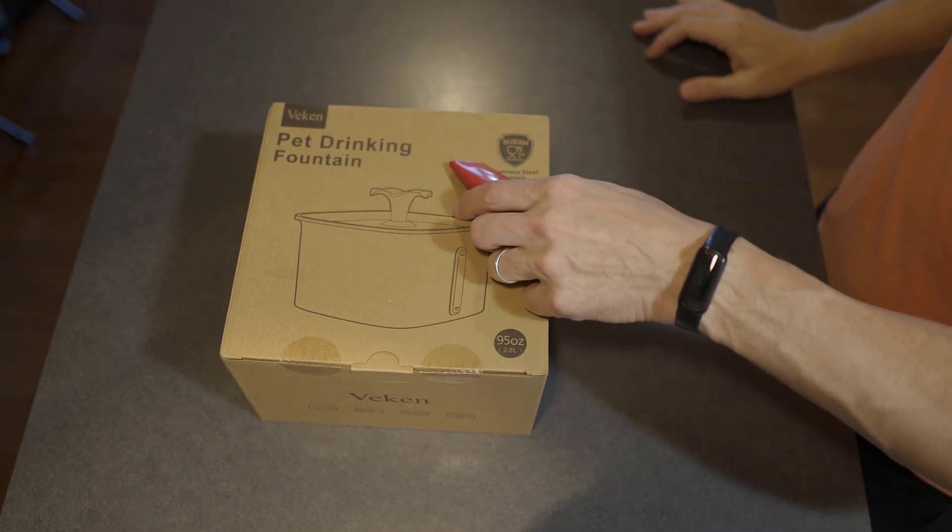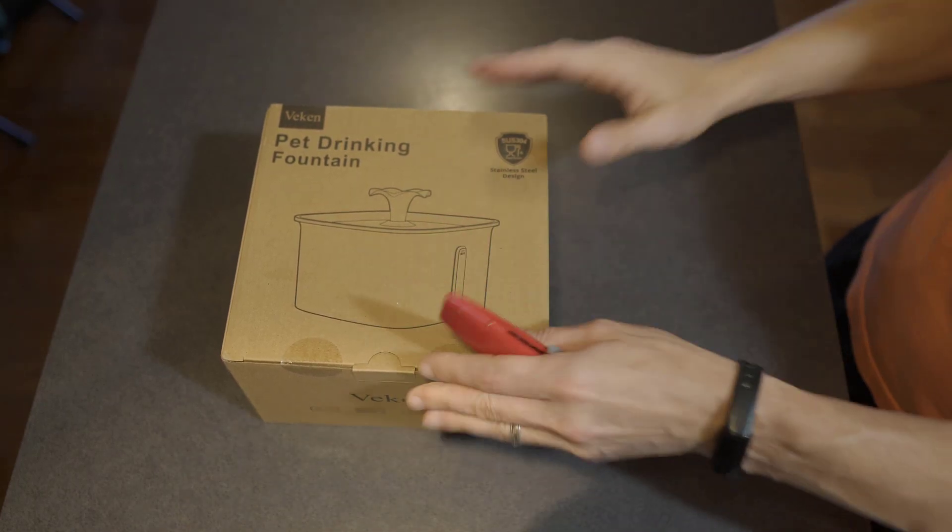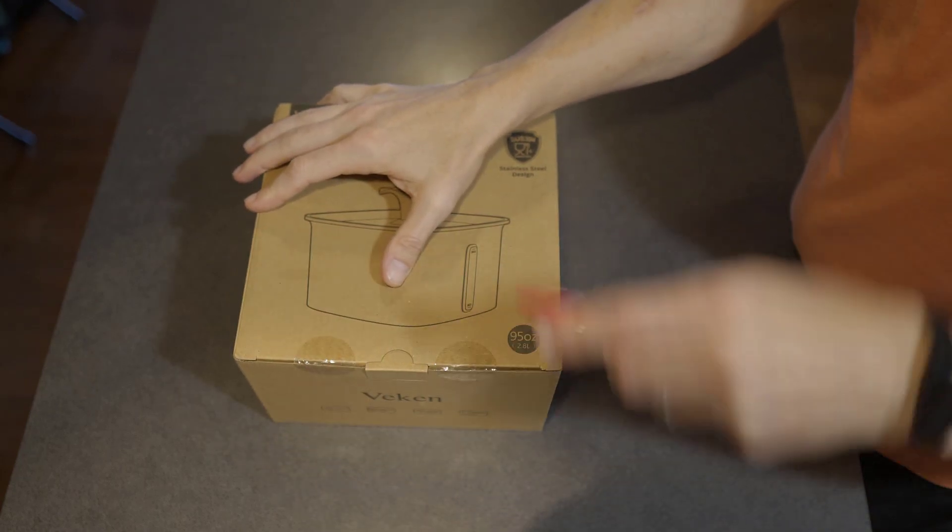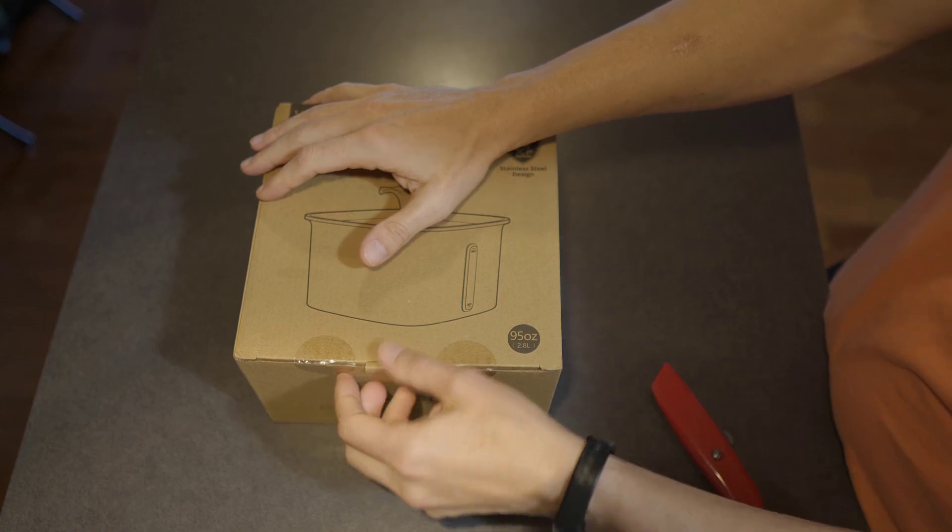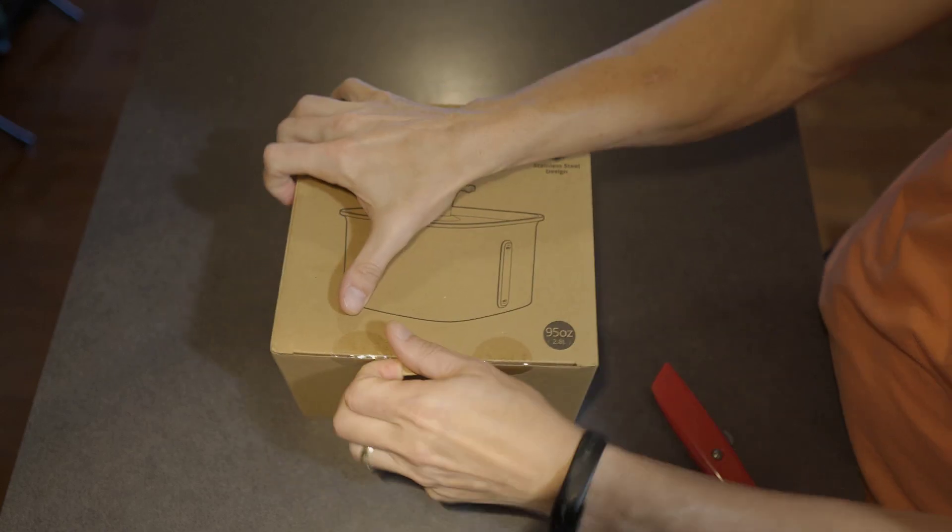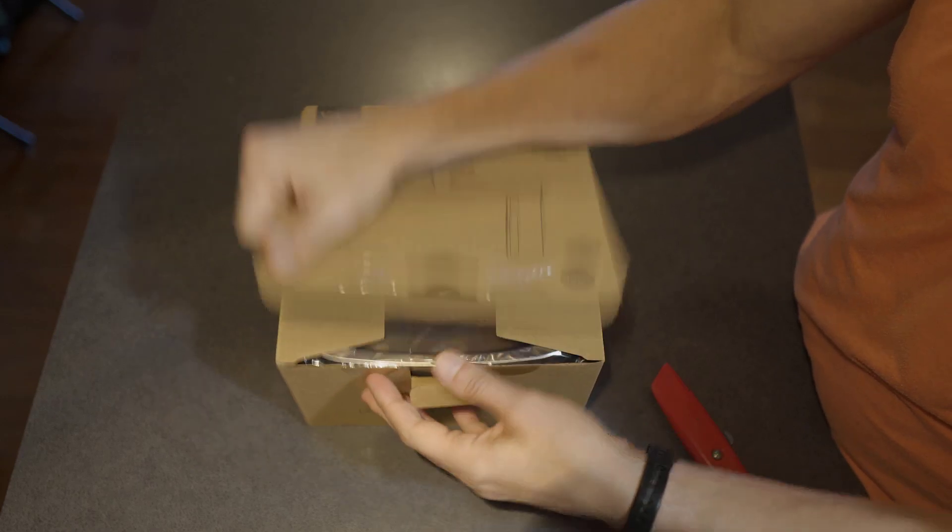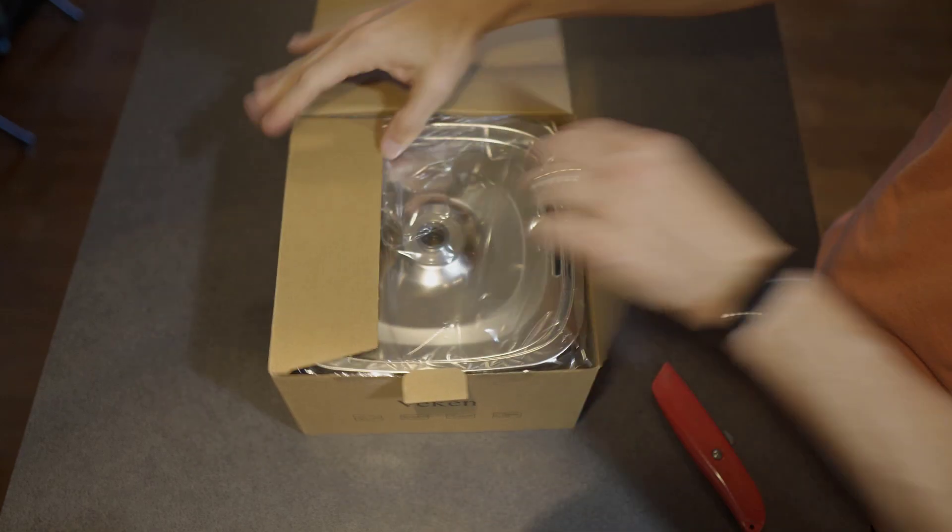I've got the Vecan Pet Drinking Fountain. This is a stainless steel silver version. I've actually got two plastic versions of this one that have been really good for me, and I just recently bought the black version of this one as well. I like to have a couple of water fountains for my cats to drink from. I have plenty of variety in the household then.